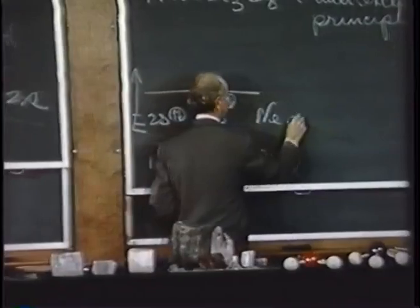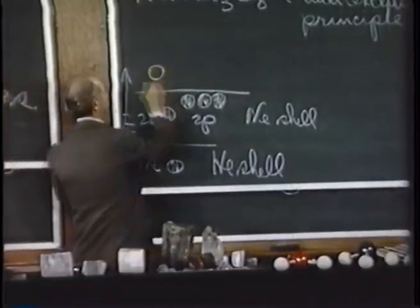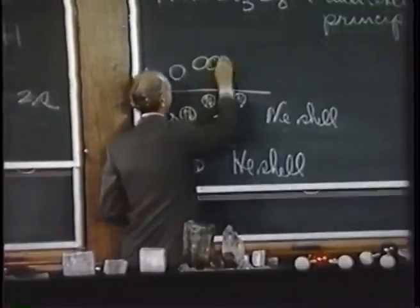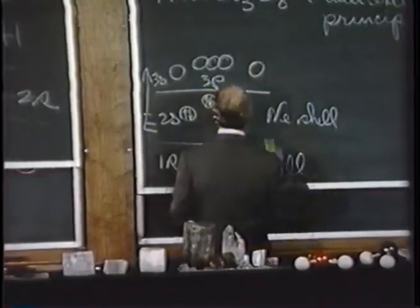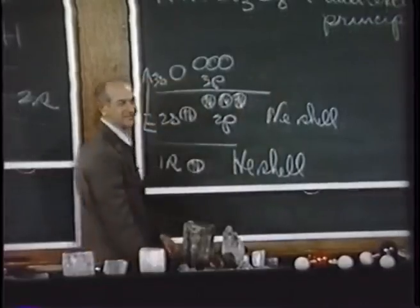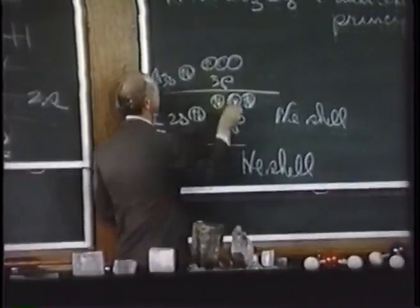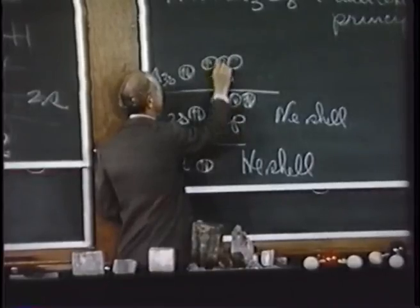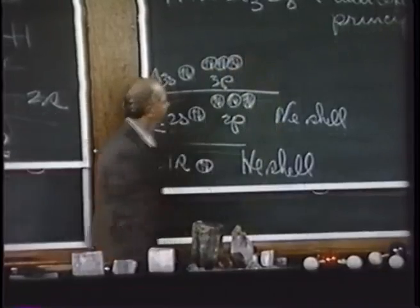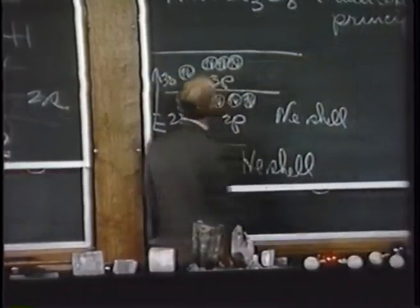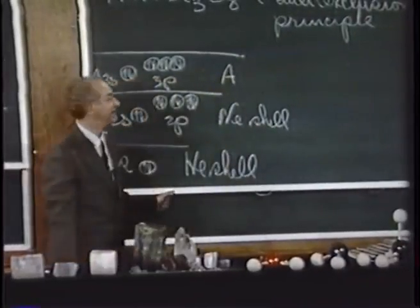Now we come to the third shell in the periodic table: a 3s orbital and three 3p orbitals. The succession of elements here — sodium, magnesium, aluminum, silicon, phosphorus, sulfur, chlorine, argon — this succession of eight elements brings us up to the noble gas argon, and we can say that this third shell is the argon shell.